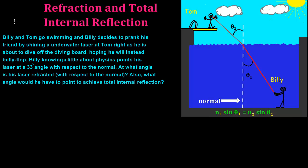It's not long before Tom is impressing the ladies with his skills and Billy decides to teach him a lesson in humility. So Billy points his laser at a 33 degree angle with respect to the normal. He believes it will then refract, hitting Tom square in the eye, teaching him a lesson in humility.